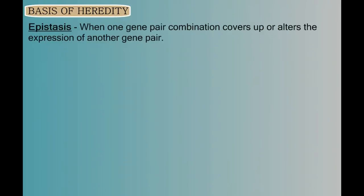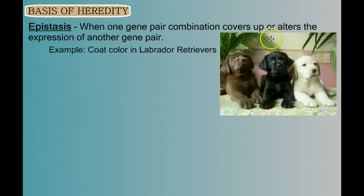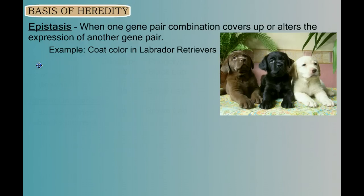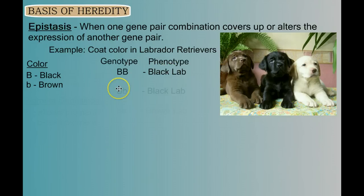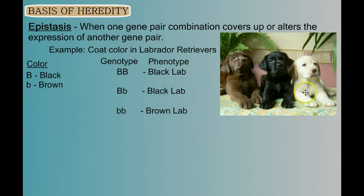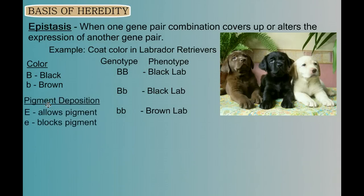Now let's look at a specific type of polygenic inheritance called epistasis. For an example, we look at coat color in Labrador retrievers. Color in Labs works as a regular Mendelian trait: one gene comes in two forms, black or brown, with black dominant over brown. So the homozygous dominant genotype gives a black lab, the heterozygous genotype gives a black lab, and the homozygous recessive gives a brown lab. But how do you get a yellow lab? There's no yellow allele. It turns out there's a separate allele that determines whether or not the pigment can be deposited into the fur.